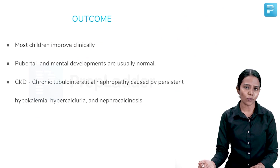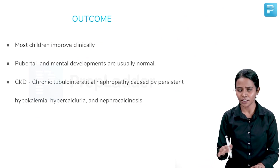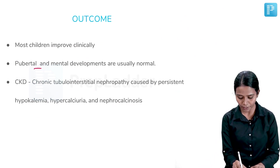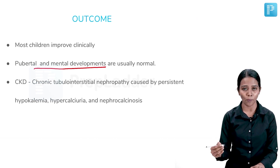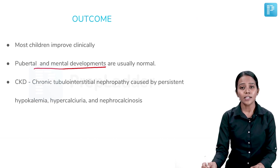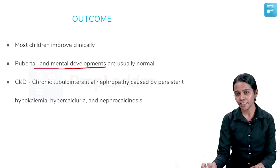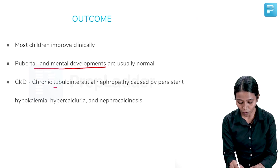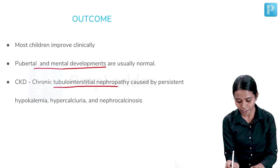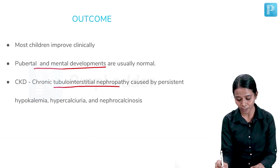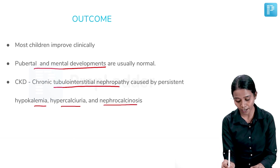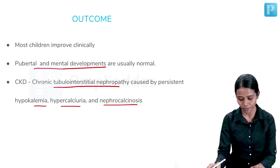Most children with Bartter syndrome improve clinically, with normal pubertal and mental development. CKD generally does not develop, but if it does, it is due to chronic tubular interstitial nephropathy caused by hypokalemia, hypercalciuria, and nephrocalcinosis.